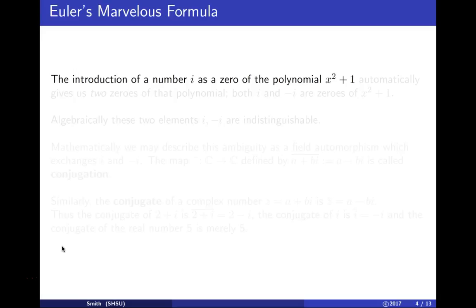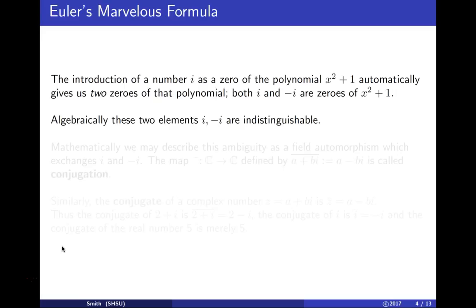The number i arose as a zero of the polynomial x² + 1, which automatically gives us two zeros: both i and -i are zeros of x² + 1. Algebraically, these two numbers are indistinguishable.